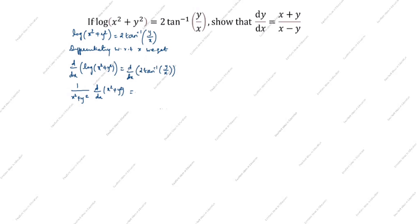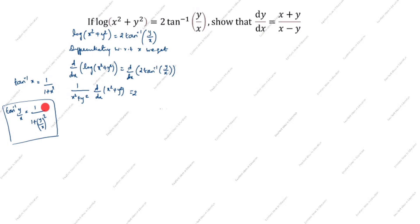For 2·tan⁻¹(y/x): the formula for the derivative of tan⁻¹(x) is 1/(1 + x²). So the derivative of tan⁻¹(y/x) is 1/(1 + (y/x)²), multiplied by d/dx of (y/x) by the chain rule. This gives us 2 × 1/(1 + (y/x)²) × d/dx(y/x).